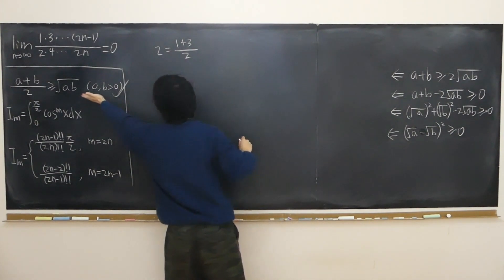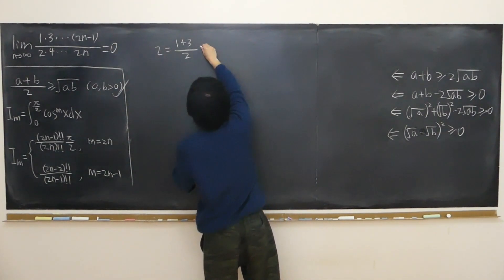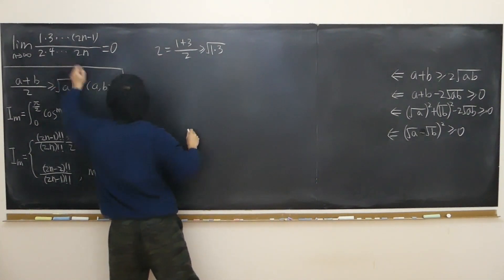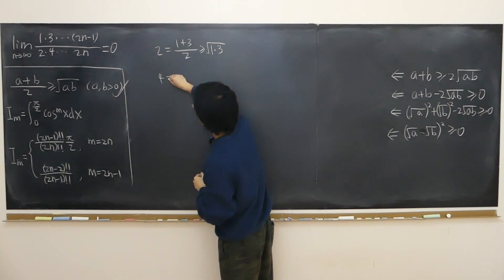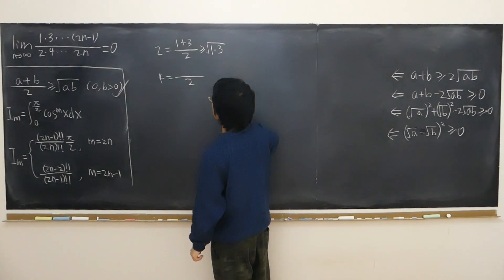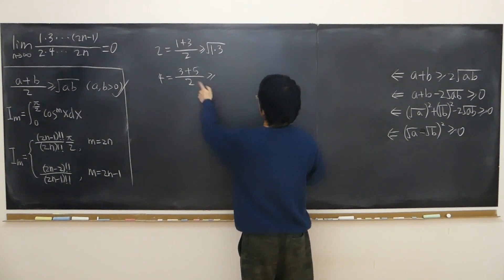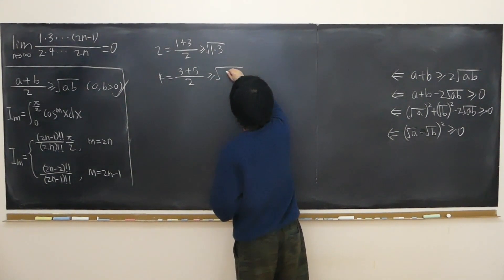Using this lemma we know that it's always greater than or equal to the geometric mean of those two numbers, that is the square root of 1 times 3. Likewise, if we look at the 4 here, 4 can be written as again half of 3 plus 5, which is greater than or equal to the square root of 3 times 5.